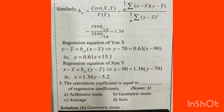Substituting the values: y equals 0.61 into (x minus 90), which gives y equals 0.61x plus 15.1. For the regression equation of x on y, we apply the value 1.365 minus 5.20. The correlation coefficient equals the geometric mean of the two regression coefficients byx and bxy.